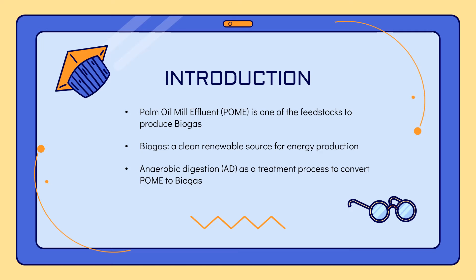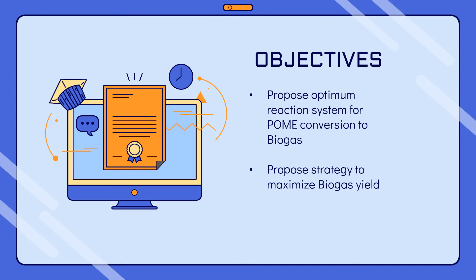Biogas is produced as a clean, renewable source for energy production. The treatment process commonly used to convert POME to biogas is anaerobic digestion, which is a biodegradation process of complex organic matter under the absence of oxygen. The objectives of this case study are to propose the optimum reaction system for POME conversion to biogas and a strategy to maximize biogas yield, specifically methane yield.